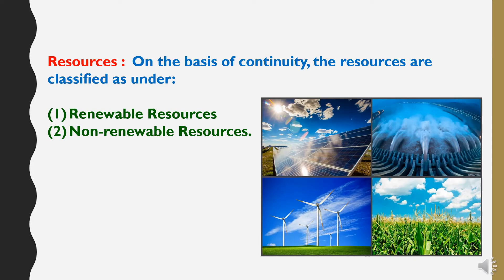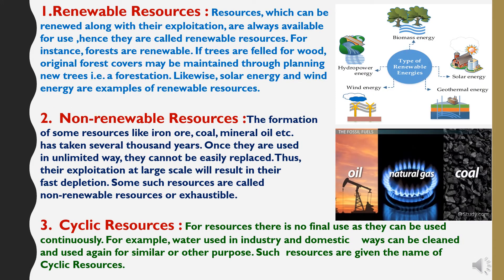On the basis of continuity, resources are classified in two types: renewable and non-renewable. Renewable resources are those which can be renewed along with their exploitation and are always available for use. For instance, forests are renewable — if trees are felled for wood, original forest cover may be maintained through planting new trees, called forestation. Likewise, solar energy and wind energy are examples of renewable resources.